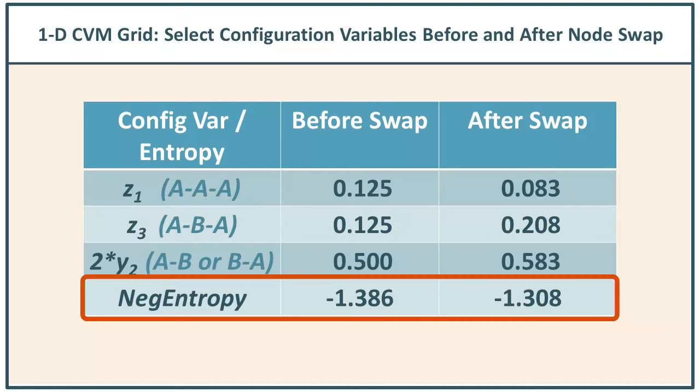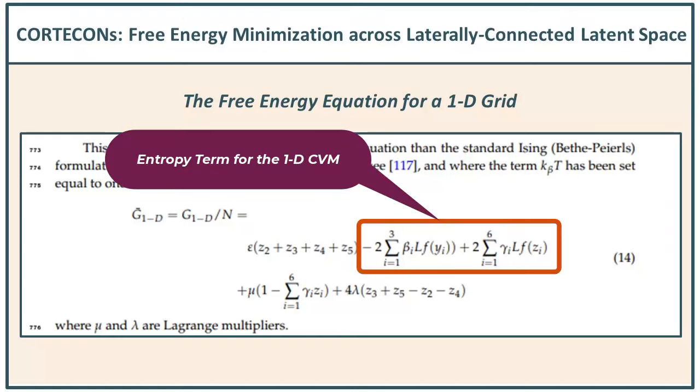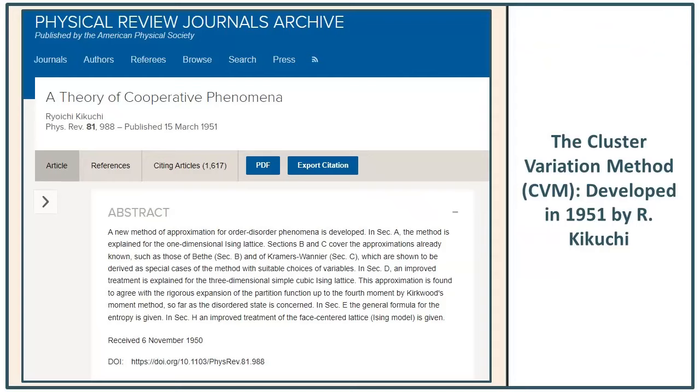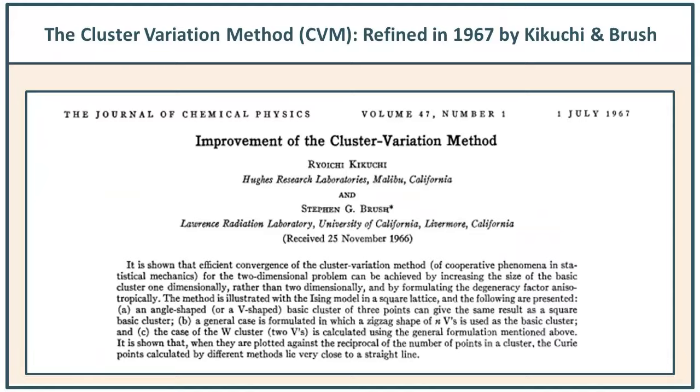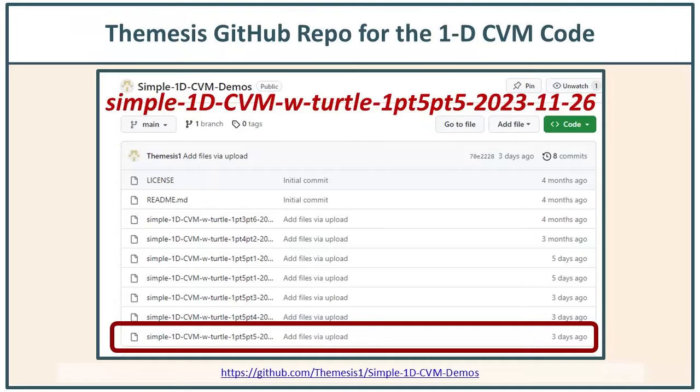We're working with a form of entropy that is relatively new to the neural network's AI community — that is, the cluster variation method introduced by Kikuchi in the 1950s and then refined by Kikuchi and Brush in 1967. Still relatively unknown, although respected in the circles that know of this work. We have an implementation where you can go hands-on and play with it. This is for the one-dimensional version — the simplest possible implementation.